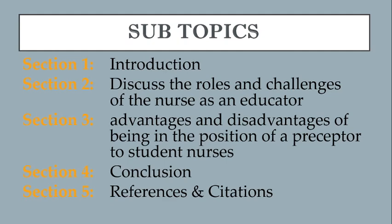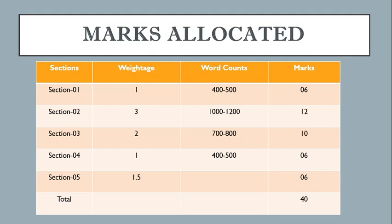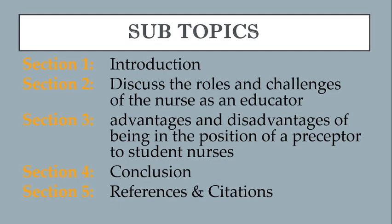You can paraphrase the information, cite it, and file it with references. Section 3 should include 700 to 800 words and 10 marks will be given. It covers the advantages and disadvantages of being in the position of preceptor to students. You can find this information from internet sources and related books. Whatever you refer to, include the citations and references.